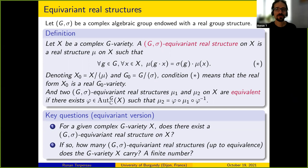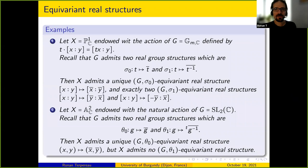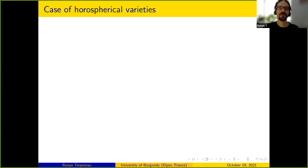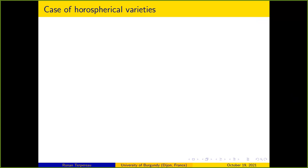For the second question we obtained a partial answer over the field of real numbers for certain families of almost homogeneous varieties. I will give a sample of our results, considering two particular cases: first the case of horospherical varieties, and then the case of almost homogeneous SL2 threefolds.